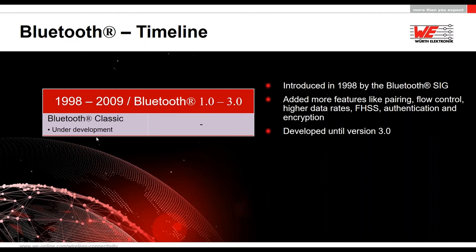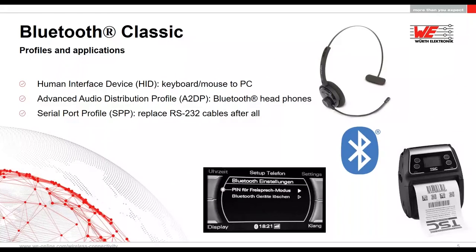After version 3.0, the development of Bluetooth Classic was stopped. The most well-known applications of Bluetooth Classic are the HID profile, used for keyboard and mouse connection to computers; audio profiles — A2DP is well known for example in hands-free kits in cars or Bluetooth speakers; and in industry, mostly the SPP, the Serial Port Profile, is used for transmission of arbitrary data.